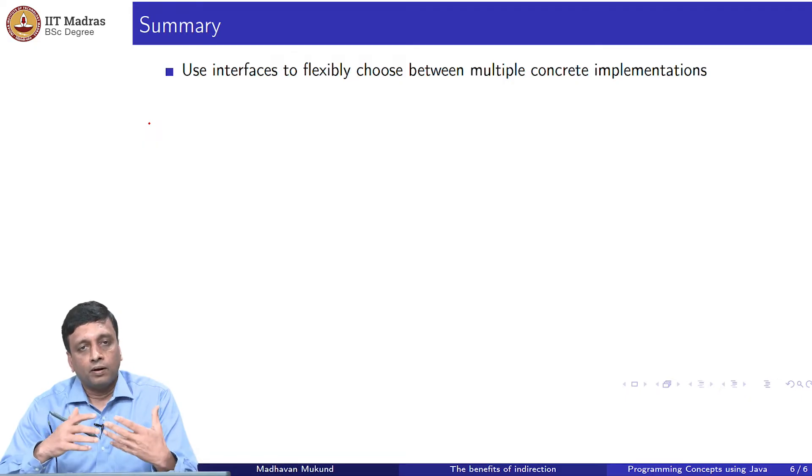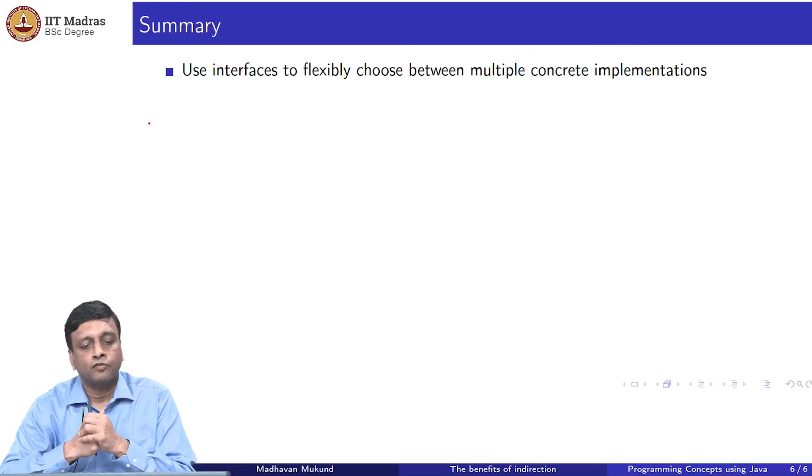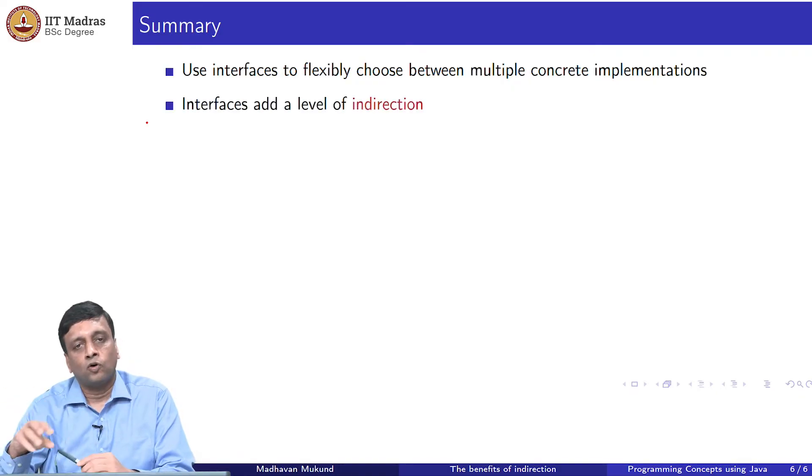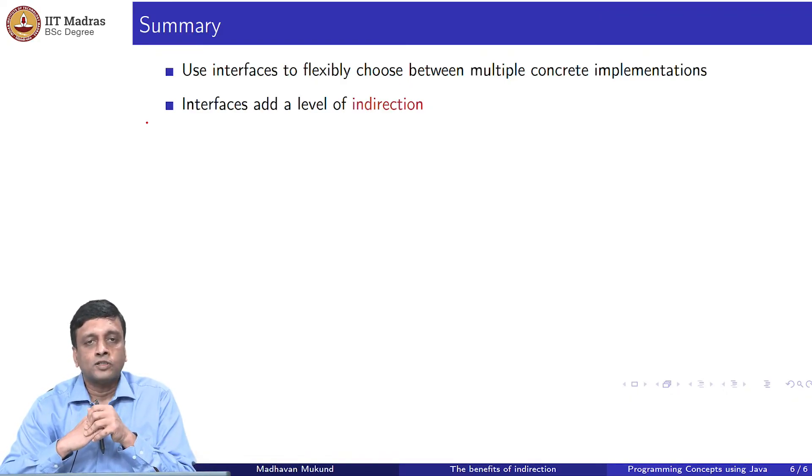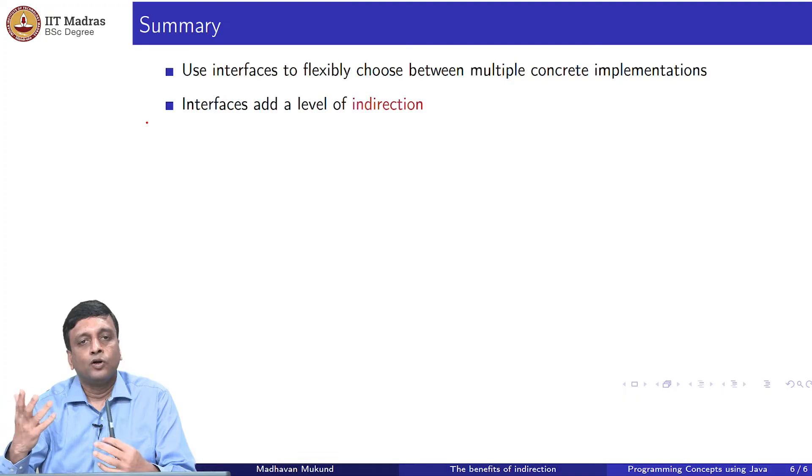This is the kind of way in which Java organizes data structure. It is important to understand this motivation for it. Basically, we can use interfaces to flexibly choose between multiple concrete implementations. That is the real moral of the story. Interfaces in addition to all the other things. Remember, we first introduced interfaces partly, it looked like a reaction to the fact that Java does not support multiple inheritance. We said if you want to keep track of multiple capabilities in a class, we allowed it to support these multiple abstract interfaces. But interfaces actually have a much larger role to play in some sense in the context of object-oriented programming and object-oriented thinking. They give you this level of indirection.